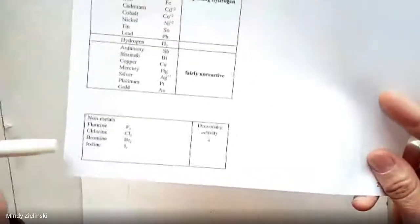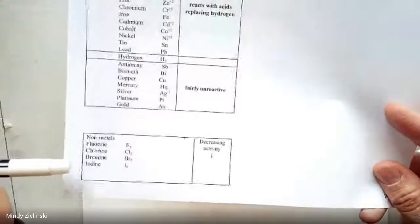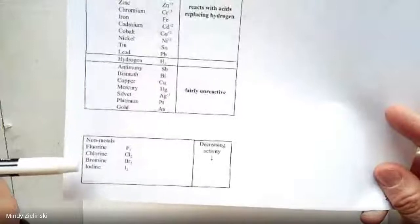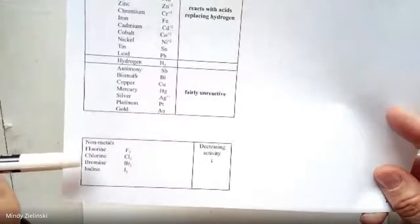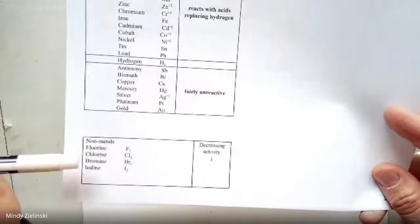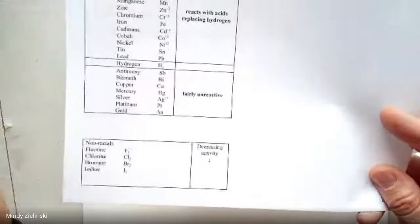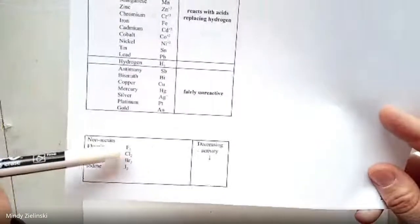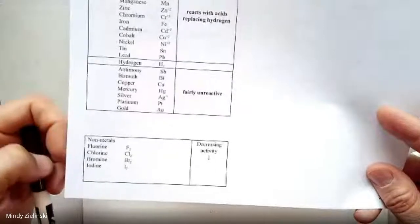This bottom list is for anion single replacement reactions. Same rules apply. The anion that is by itself is only going to be able to replace the anion in the ionic compound if it is on top of, king of the mountain, if it's listed above the anion that's already part of the compound.